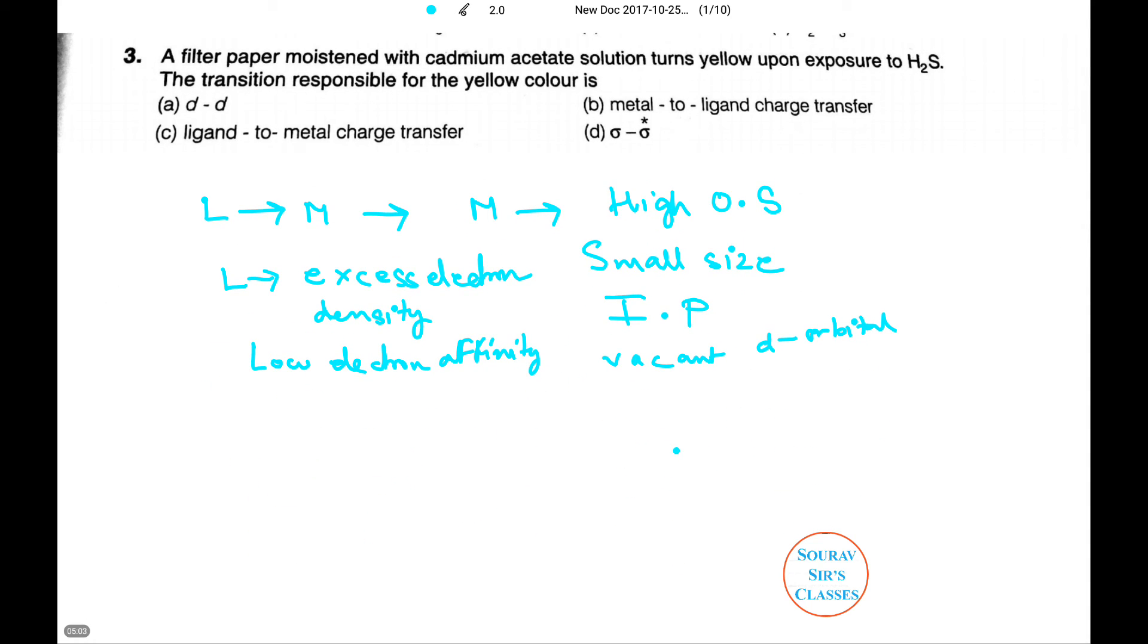In case of cadmium acetate, cadmium has two plus charge and acetate has high electron density. So in this case the acetate is an electron rich species and cadmium is becoming an electron deficient species. Hence there is a ligand to metal charge transfer which leads to the yellow color.